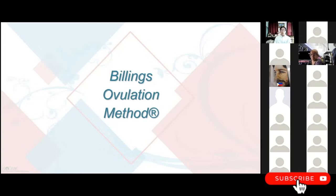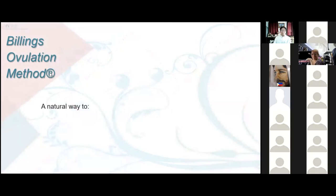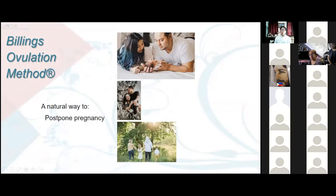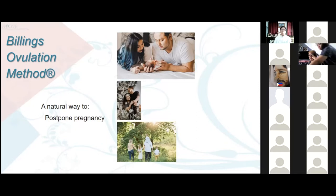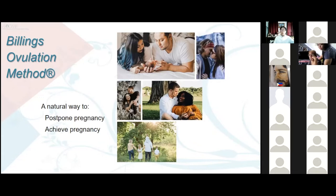These slides can be used in the Pre-Cana, and after this I'll be giving you a copy. The Billings Ovulation Method is a natural way to postpone pregnancy for those couples who would like to abstain because of a grave reason. As Humanae Vitae tells us, if couples are in a grave situation and there is a need to space the number of their children, the Church teaches to take into account the natural rhythm of the body without offending moral principles.